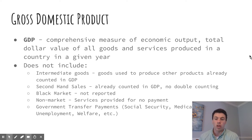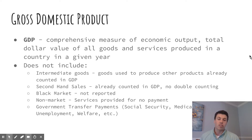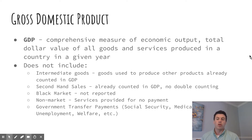We're going to start with gross domestic product. This is a measure of economic output — what we're trying to do is look at all the goods and services produced in the country and determine how much they're worth. It's a total dollar value. In the United States, it's over $18 trillion a year. We're going to look at what it includes, but we're going to start with what it doesn't include.